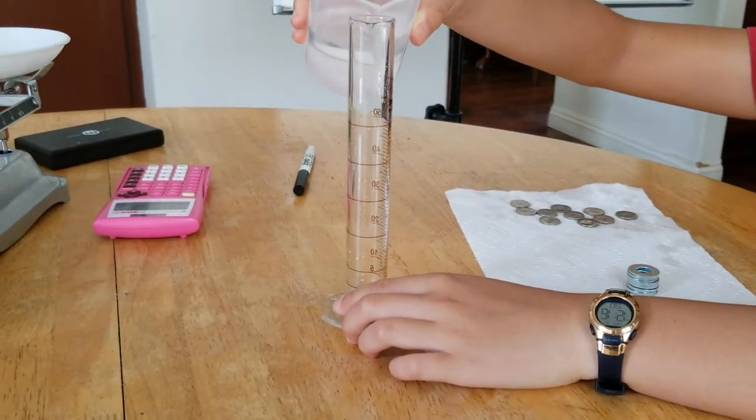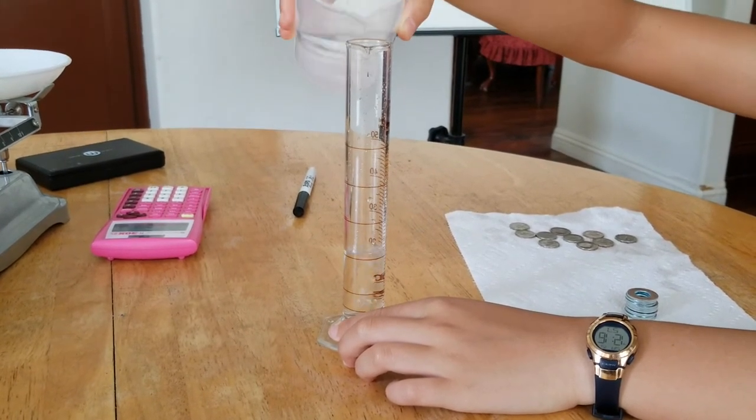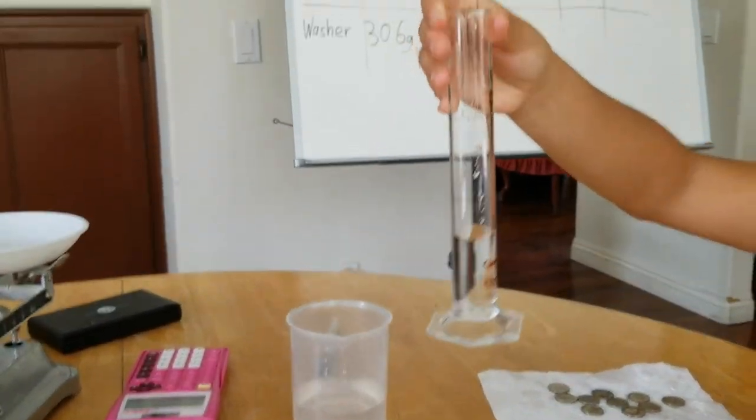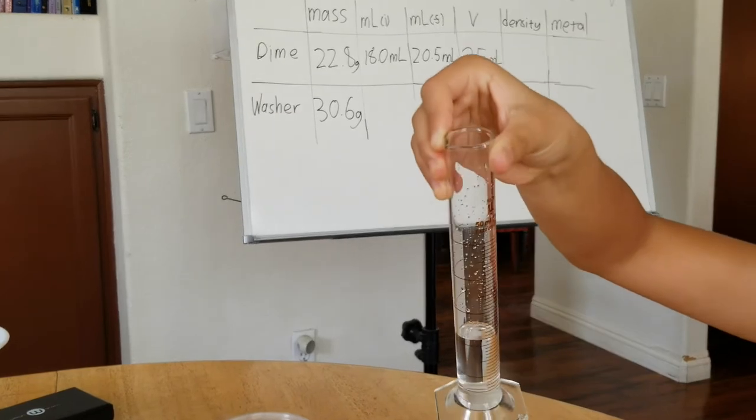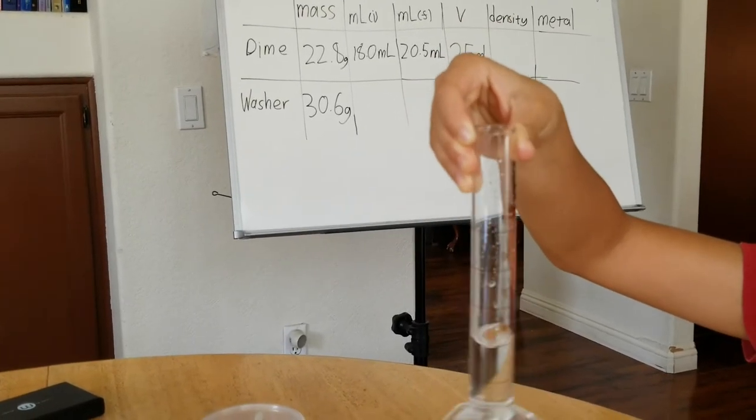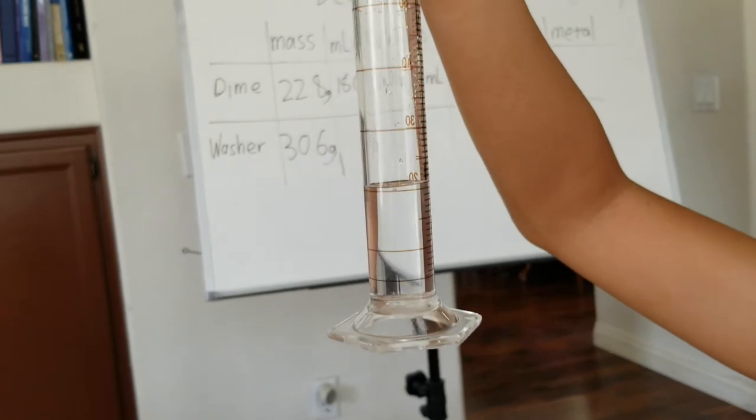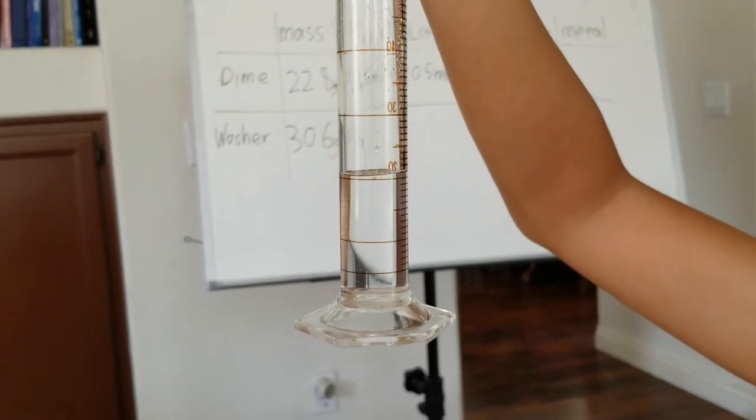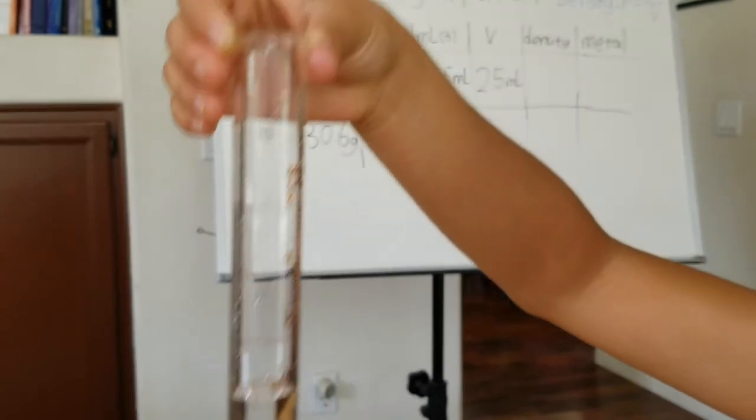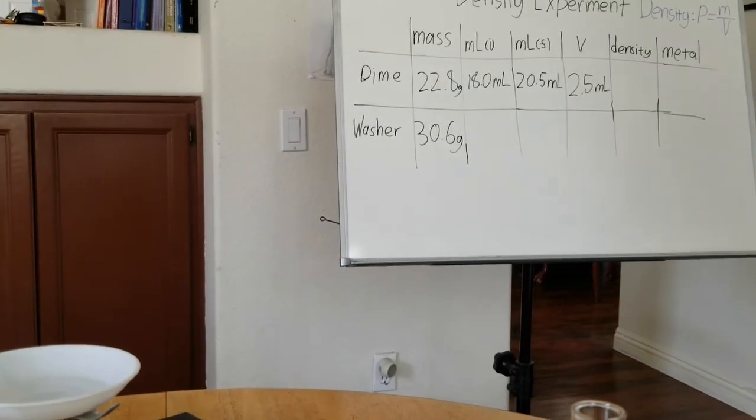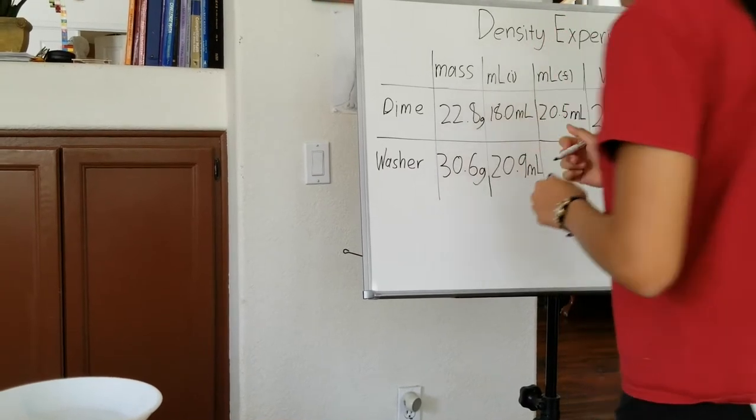That's easy, 20.5. So once again, roll it, get the air bubbles out. There's still air bubbles. Right now we are about 20.5. Right now the curve is at 20.9. So this is the volume, 20.9.